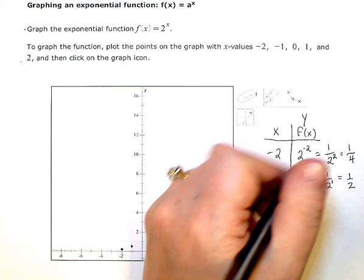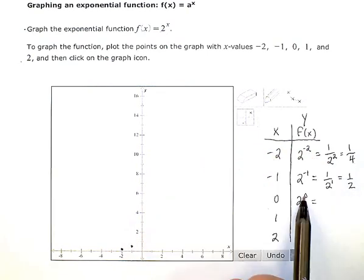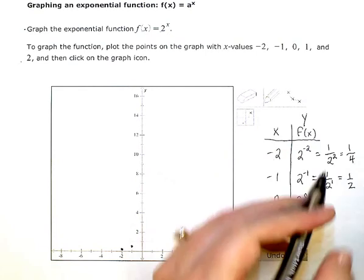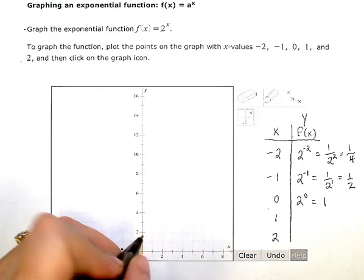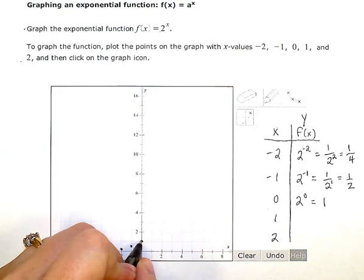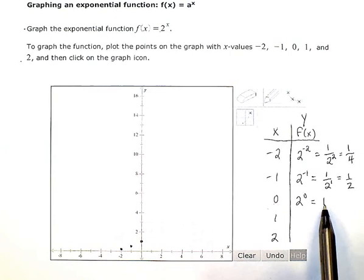Now 0: 2 to the 0 power. Well, anything raised to the 0 power is 1, so at 0 we have a y value of 1. In your plot point tool you'll put in 0 comma 1 as your coordinates.